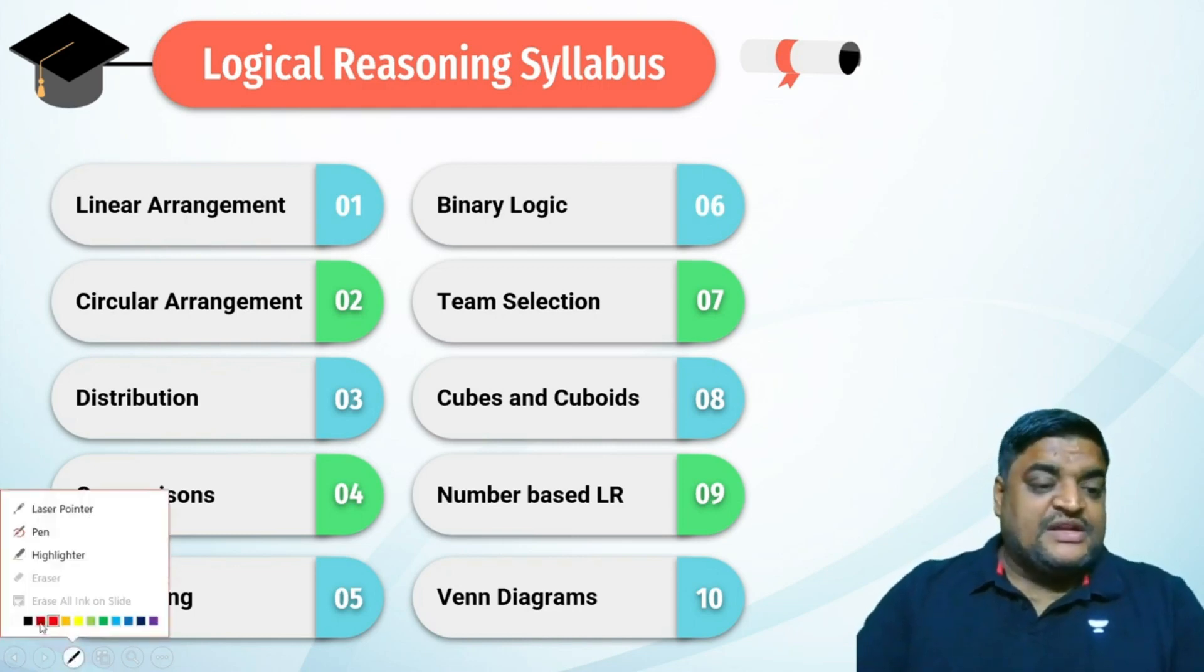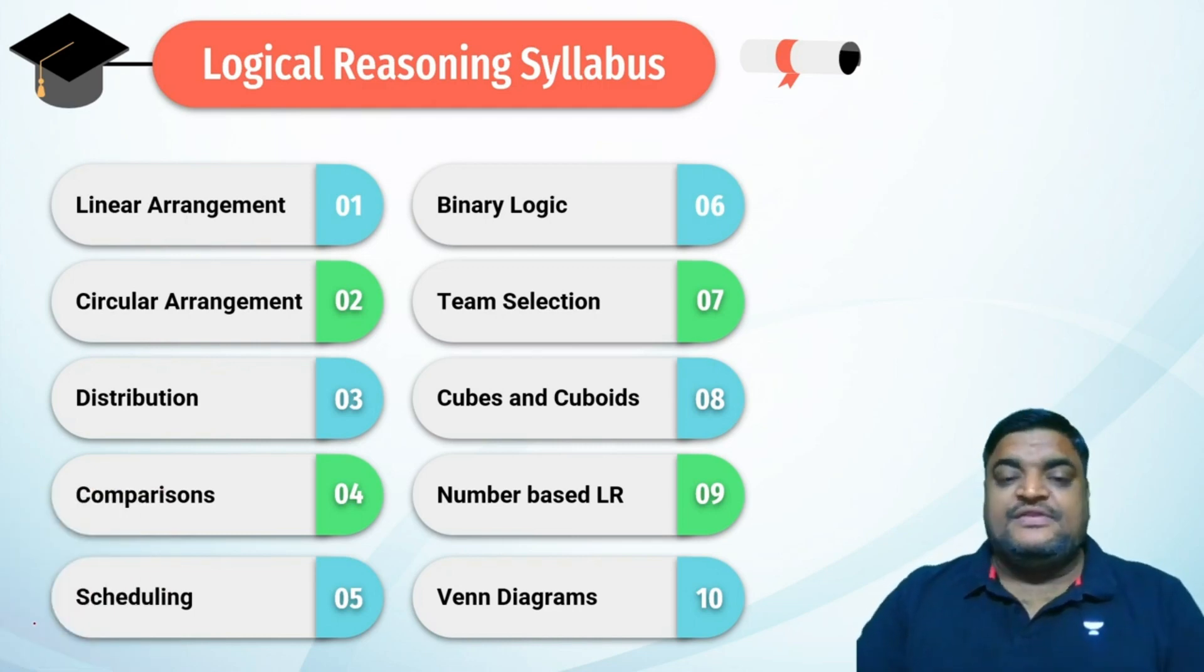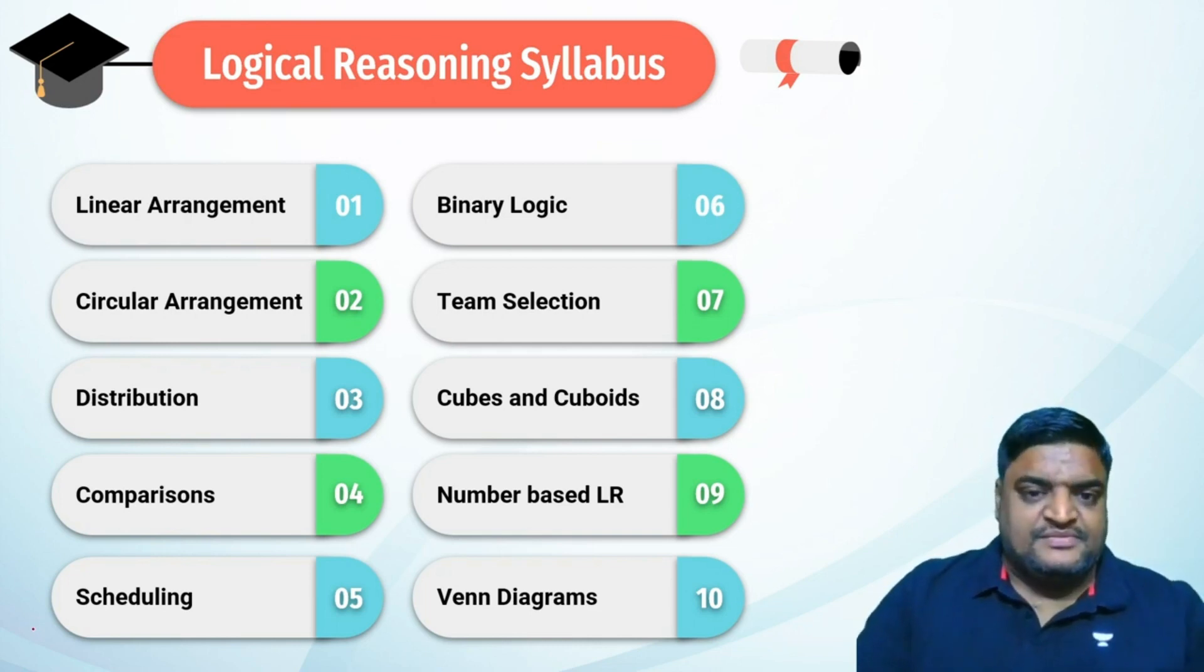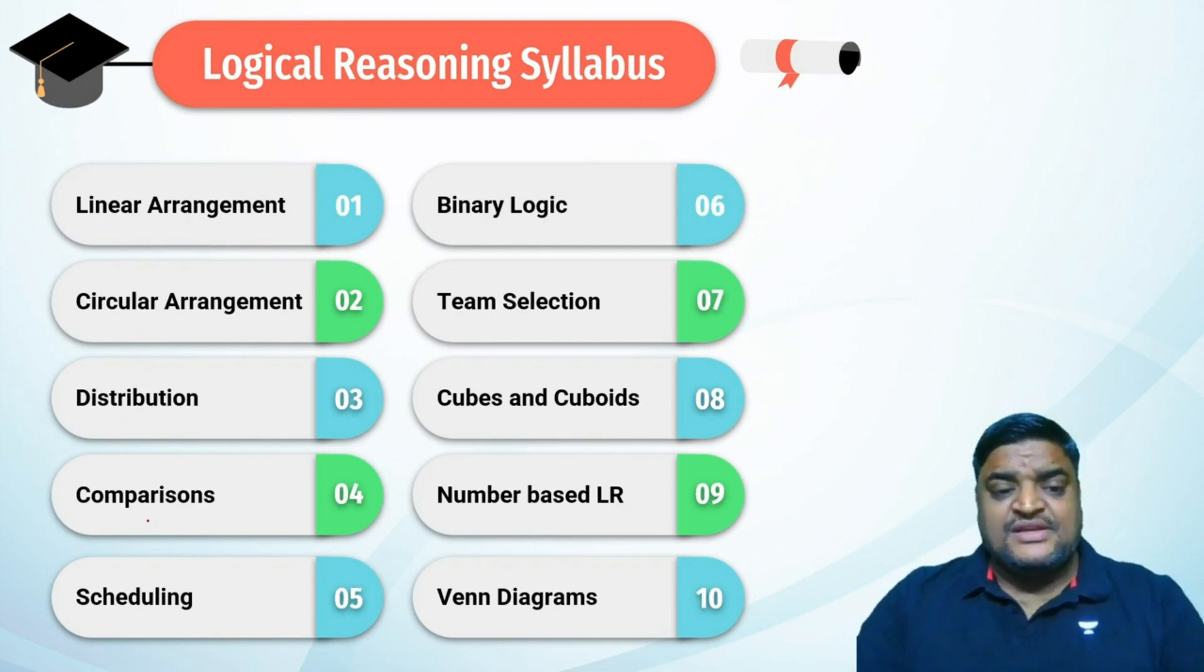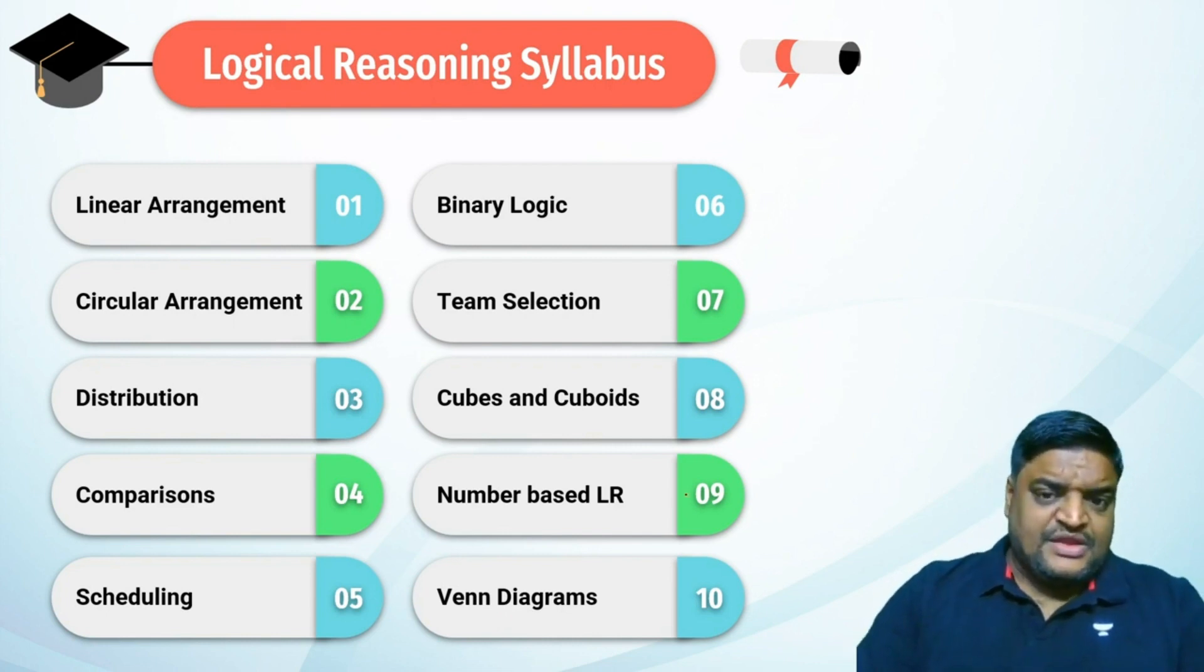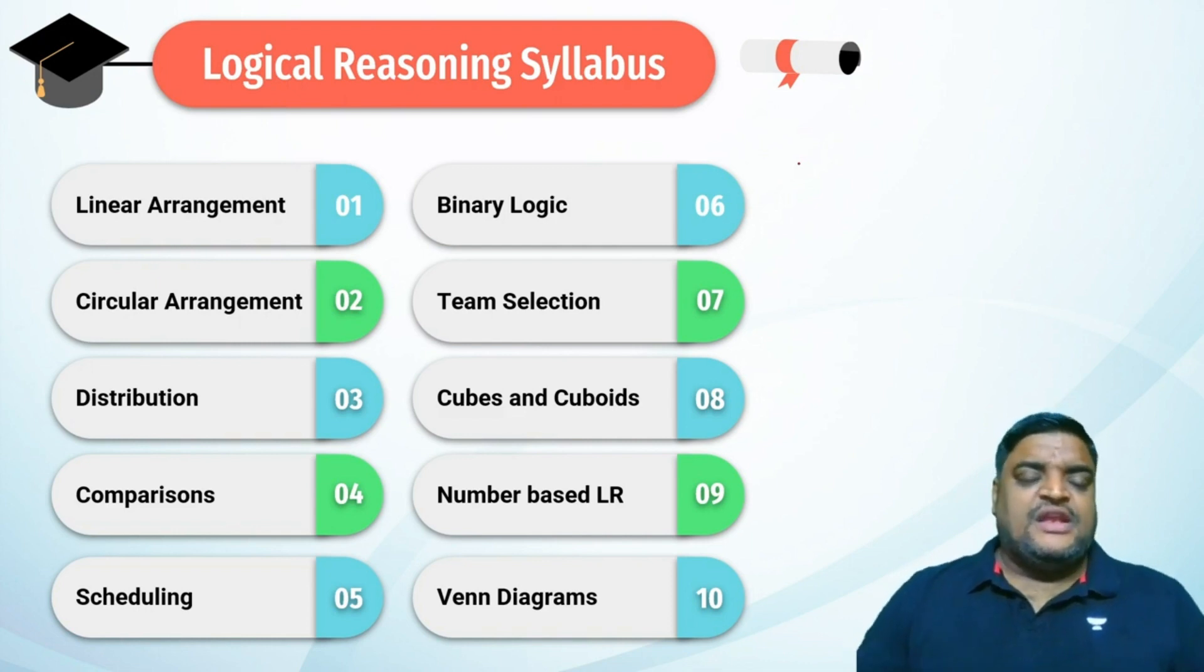These are some important topics for logical reasoning that you should be covering first before taking your preparation to the next level. The logical reasoning syllabus includes linear arrangements, circular arrangements, distributions, comparisons, scheduling, binary logic, team selections, cubes and cuboids, number-based LR, and Venn diagrams. You can prepare these topics and consider this as your syllabus.